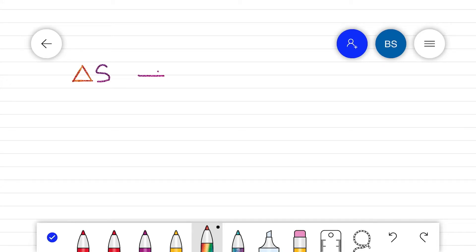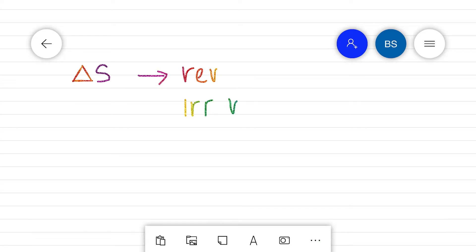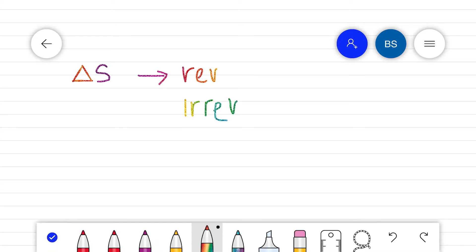Hi everyone, in our previous sessions we have defined the entropy change for a reversible and irreversible process, and we have calculated the entropy change for a spontaneous process, then again the entropy change for an equilibrium stage of the process.